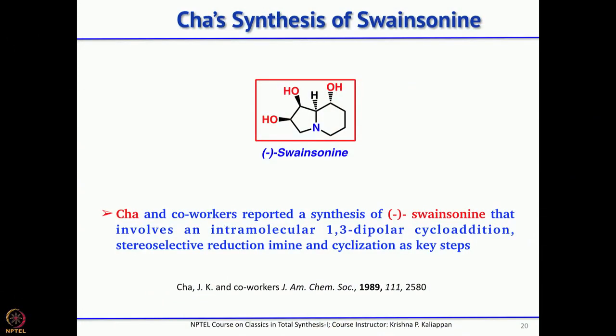The third synthesis, again started from commercially available D-erythrose, was reported by J.K. Cha. The key reactions are a 1,3-dipolar cycloaddition between an azide and a double bond — specifically an intramolecular 1,3-dipolar cycloaddition — and then a highly stereoselective reduction of an imine.